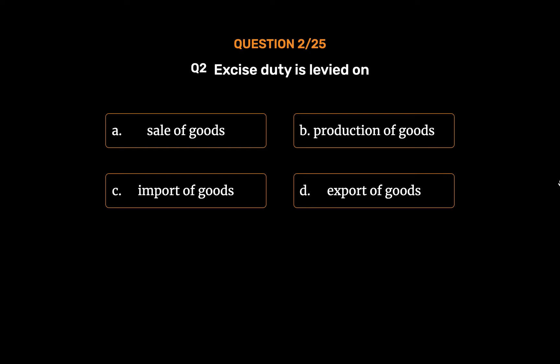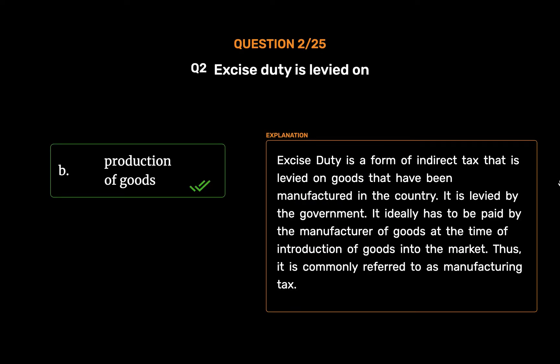The correct answer is Option B: Production of goods. Excise duty is a form of indirect tax that is levied on goods that have been manufactured in the country. It is levied by the government. It ideally has to be paid by the manufacturer of goods at the time of introduction of goods into the market. Thus, it is commonly referred to as manufacturing tax.